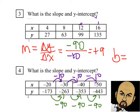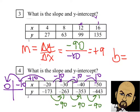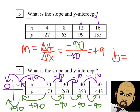Now let's find the y-intercept. We need to count up to where x equals 0. Since we're subtracting 10 going right, we add 10 going left. Adding 10 to negative 20 gives negative 10, and adding 10 again gives 0. So we move two steps on the y values — instead of subtracting 90, we add 90 twice. Negative 173 plus 90 is negative 83, and negative 83 plus 90 is positive 7. So our y-intercept is positive 7.